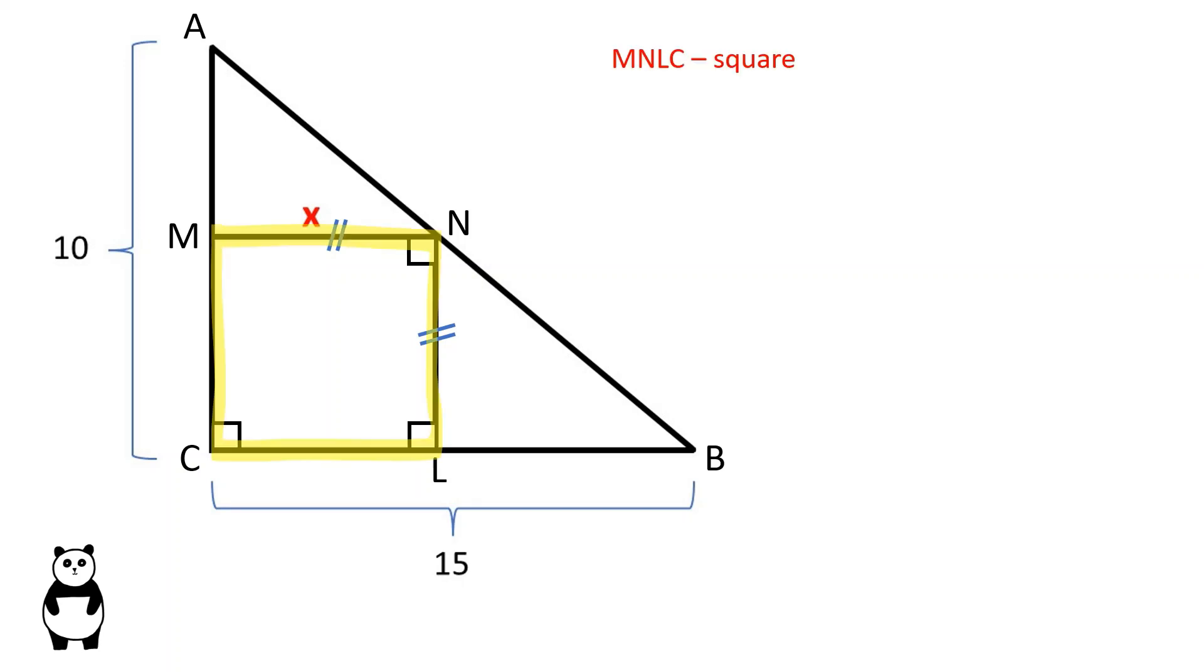Let's solve this problem. MNLC is a square, all sides are equal, all angles are equal to 90 degrees.